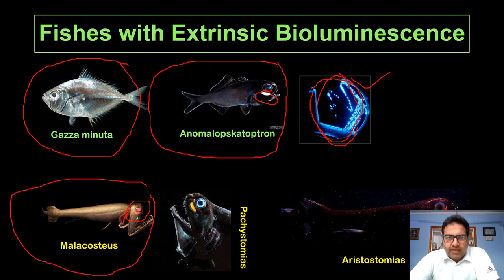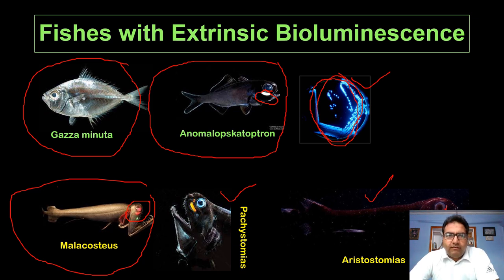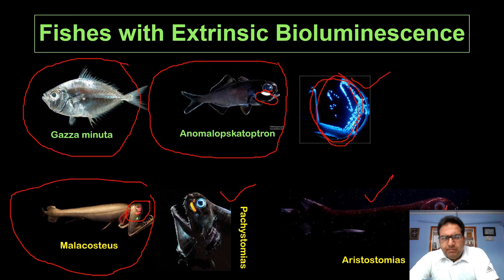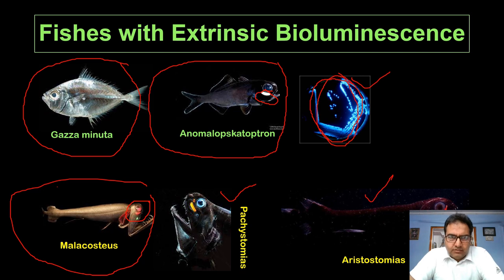Pachystomias and Aristomias show sub-orbital photophores that emit long-wavelength red light, and post-orbital photophores that glow blue. So they can produce two kinds of light: long-wavelength red and short-wavelength blue. The function of the red bioluminescence may be related to intraspecific communication.